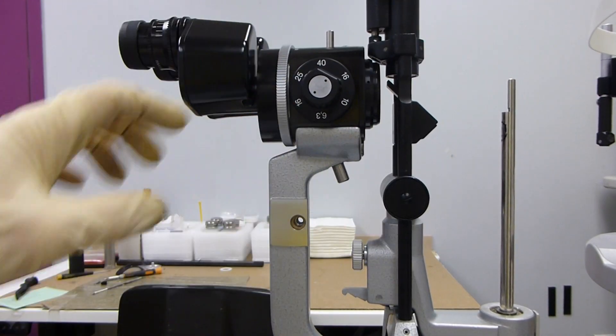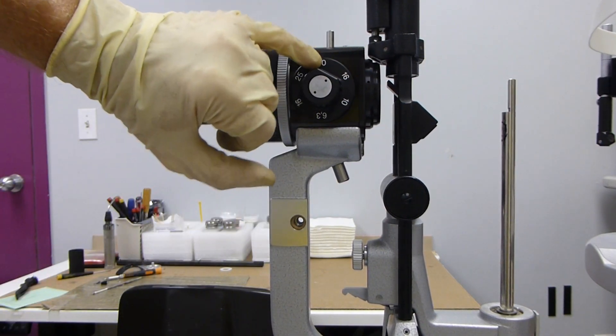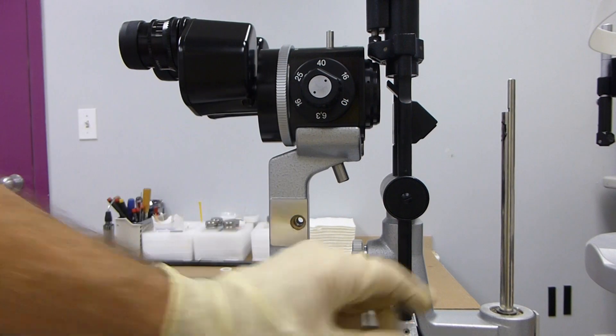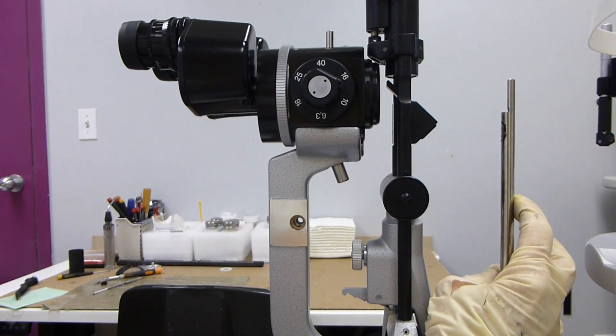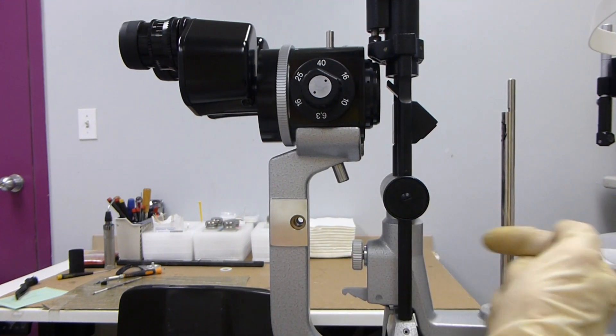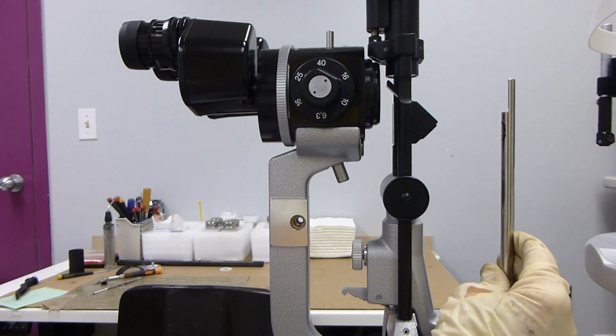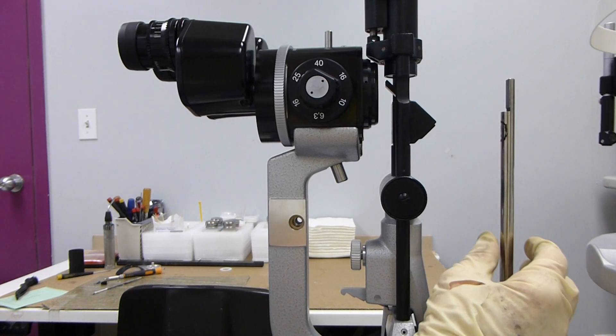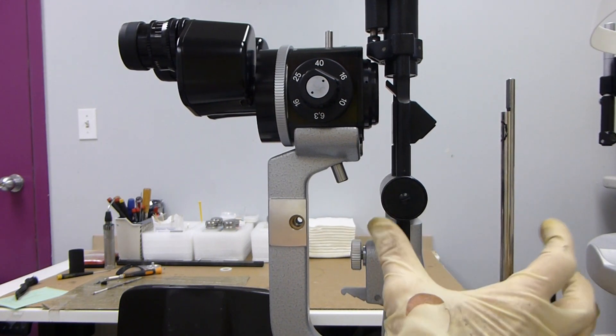Set your mag changer on 40 and then move your focus rod one way or the other to see what it needs to be in a little bit better focus.